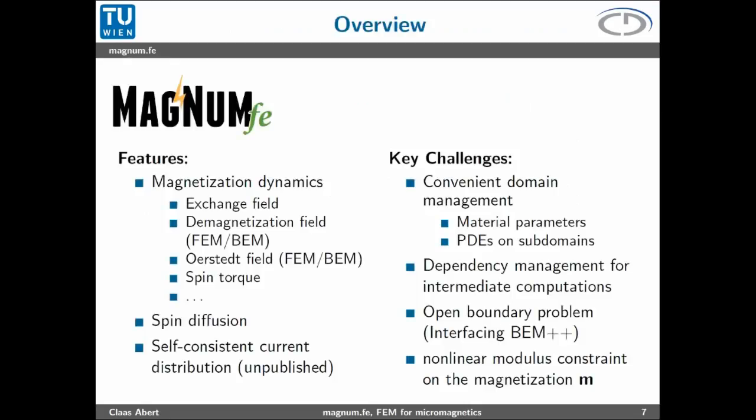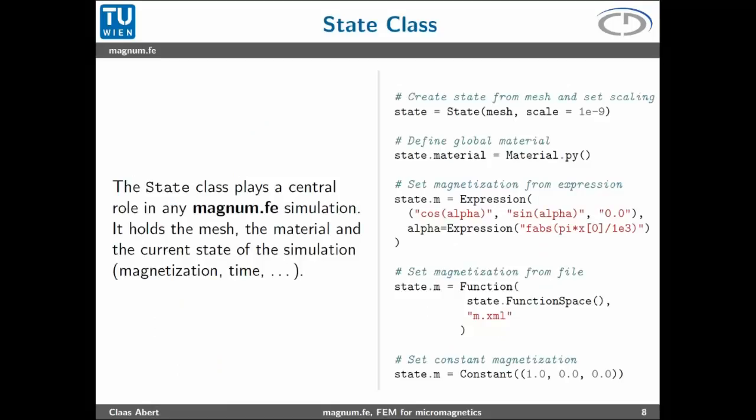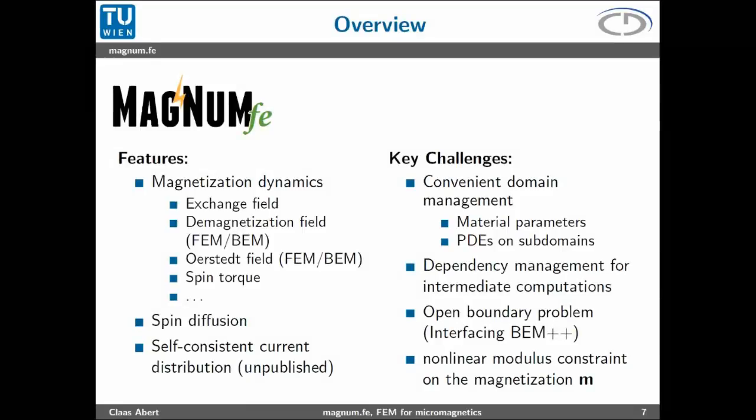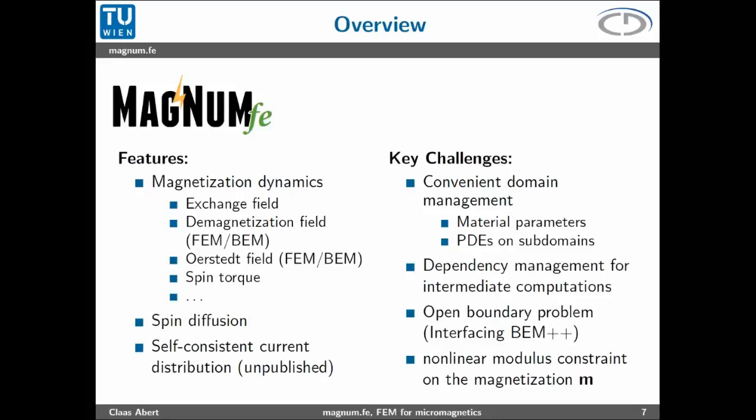Magnum FE is able to describe the magnetization dynamics as described by the Landau-Lifshitz-Gilbert equation including the exchange field. The demagnetization field is actually a Poisson problem with open boundary conditions, which we treat with finite element method coupled to boundary element method. I will go into detail later. And many more contributions, for example an Oersted field generated by electric current, spin torque which describes the interaction of spins carried by conducting electrons with the magnetization, and some more physical effects.